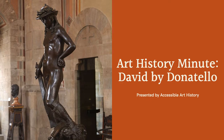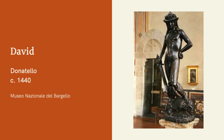The biblical hero David was a popular subject in Renaissance art. The idea of a simple shepherd defeating the much stronger giant struck a chord within the new humanist ideals that were being circulated. Around 1440, Donatello was commissioned to create a sculpture showing David standing over the conquered Goliath.